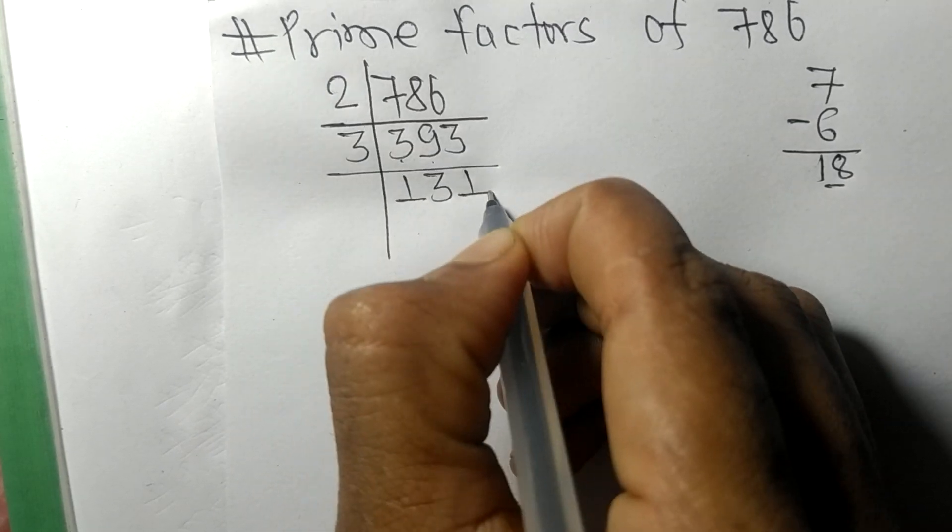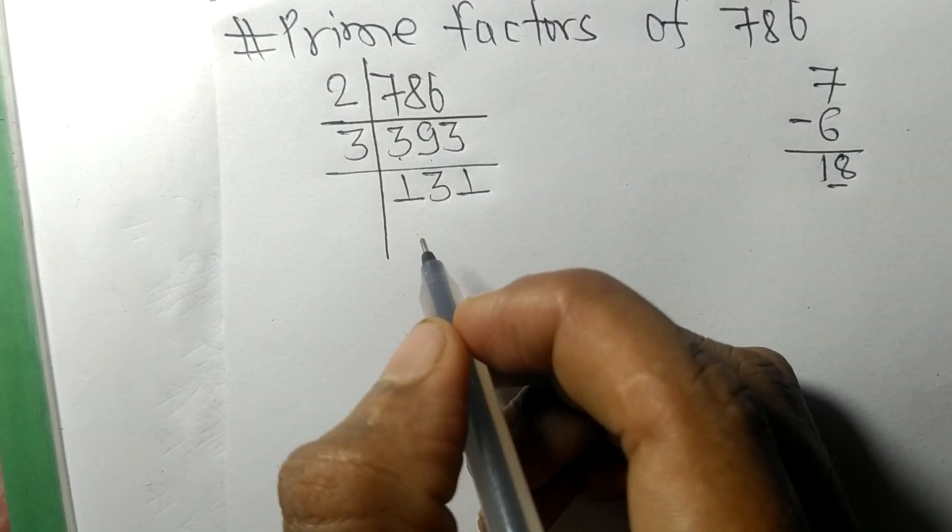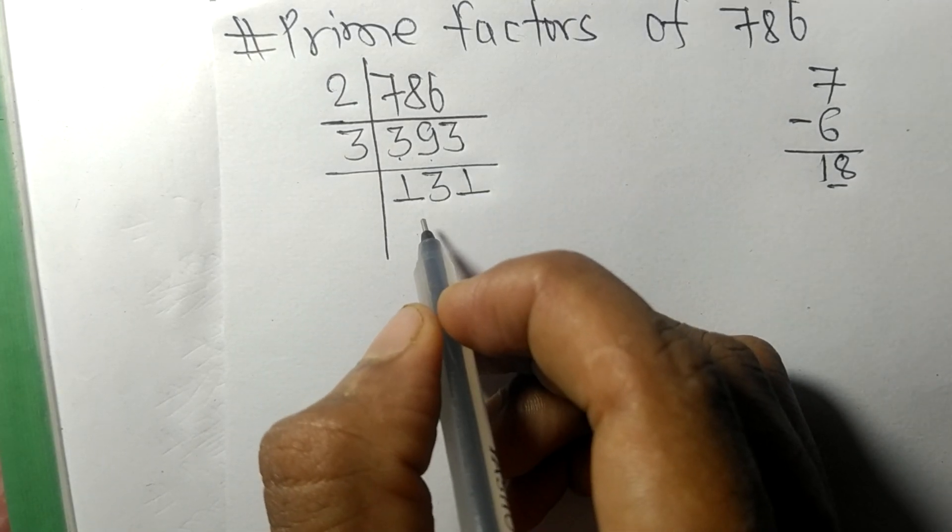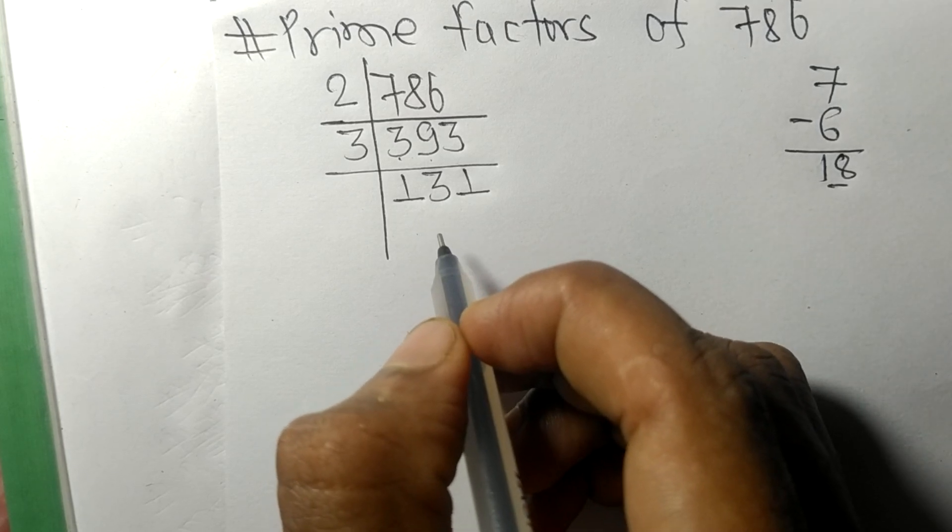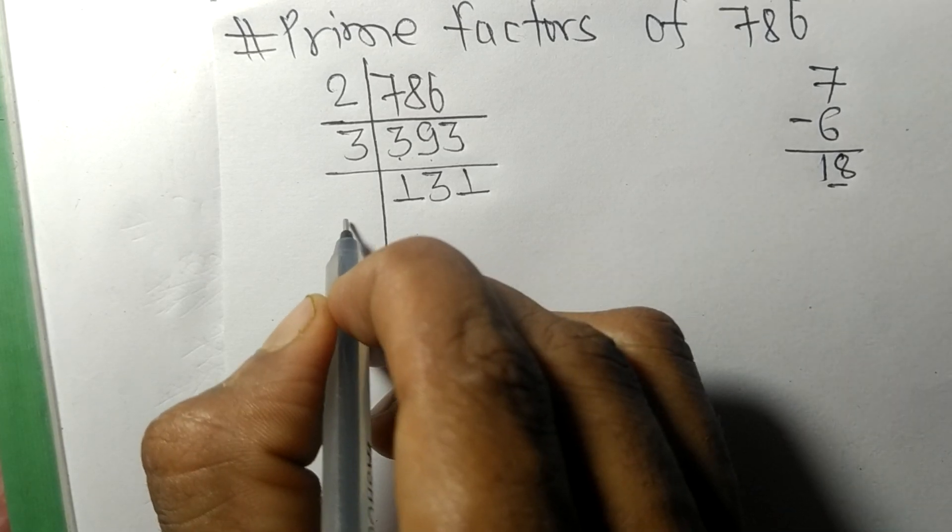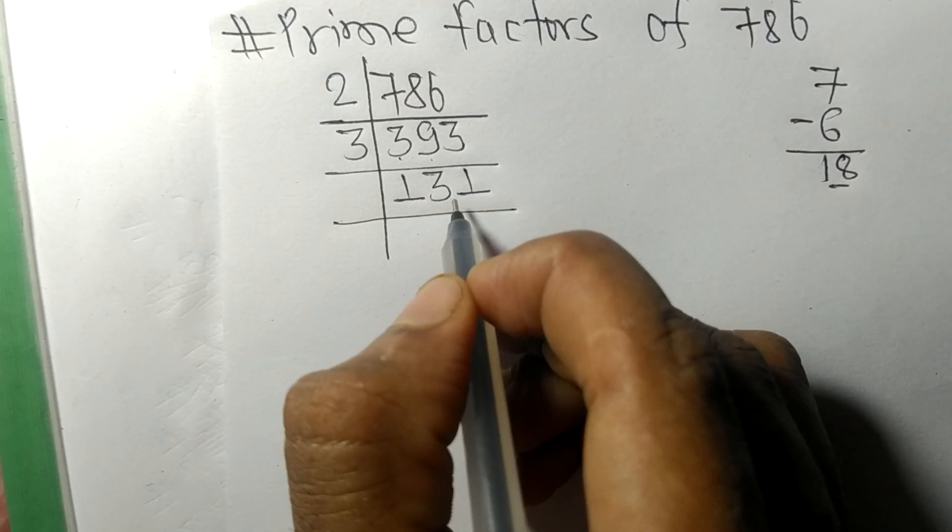9, 3 times 1 means 3. So now we got 131, which is a prime number, so it is divisible